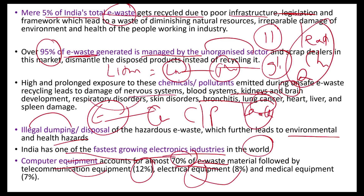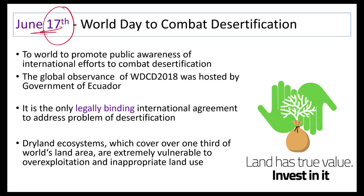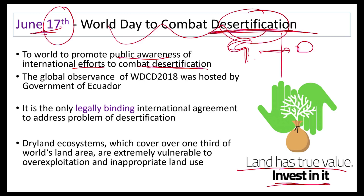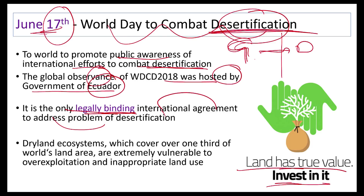June 17 is celebrated as World Day to Combat Desertification. The theme was 'Land Has True Value — Invest in It.' Desertification means not only conversion of green land to desert but also degradation of existing deserts. The global observance was hosted by Ecuador. The UNCCD is the only legally binding international agreement addressing desertification. Dry land ecosystems cover one-third of the world's land area.